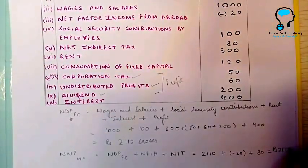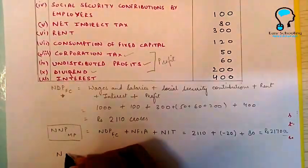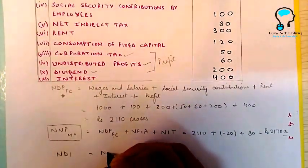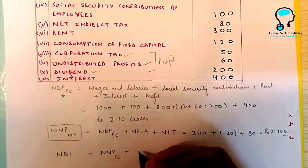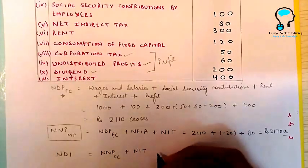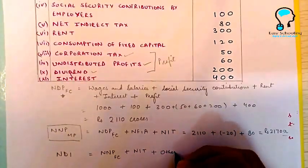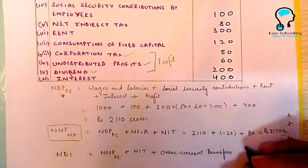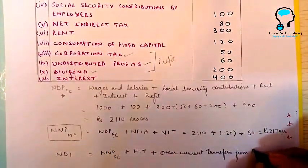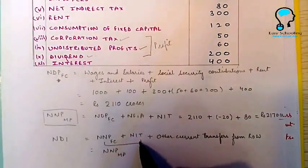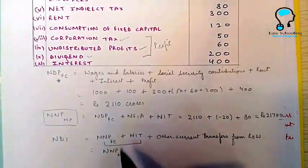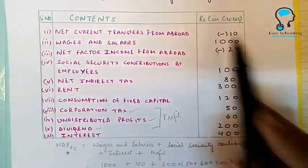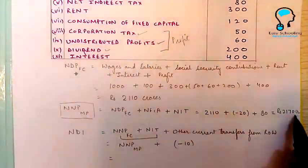Net factor income from abroad is minus 20 and net indirect taxes is 80, giving NNP MP = rupees 2170 crores. The formula for national disposable income is NNP FC plus net indirect taxes plus other current transfers from the rest of the world. NNP FC plus net indirect taxes equals NNP MP, which we have already calculated.